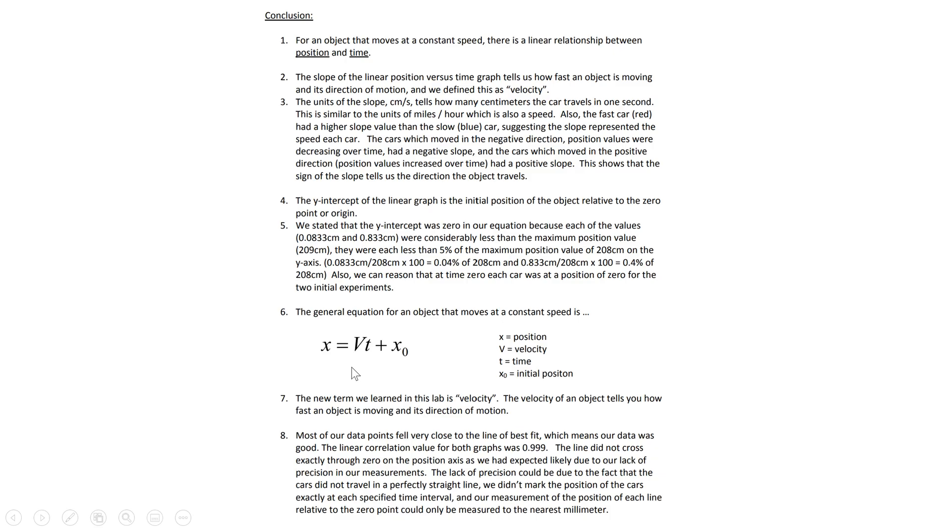For six, you are going to write the general equation that we got. And you need to do this with the correct variables and have the variables listed off to the side, like you can see here. In seven, you're going to list any new terms. For this lab, basically just velocity was the word that we came up with.